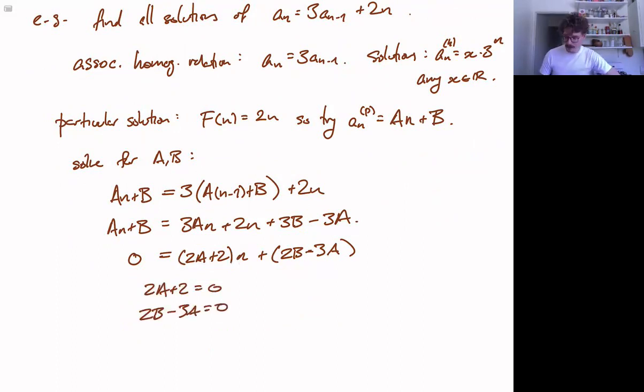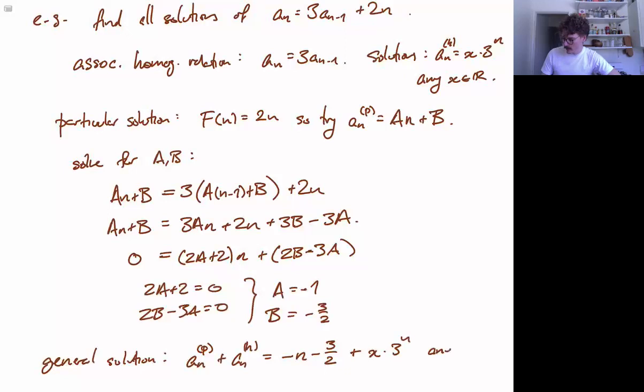So we get 2 a plus 2 equals 0 and 2 b minus 3 a equals 0. And again, for the sake of time, I'm going to spare us the solving of the system and just say that a turns out to be negative 1 and b turns out to be negative 3 halves. So our general solution has the form particular solution plus homogenous solution and in this case what we have found is the particular solution is negative n minus 3 halves and the homogenous solution is x times 3 to the n for any x in r. And that is how we solve non-homogenous linear recurrence relations.